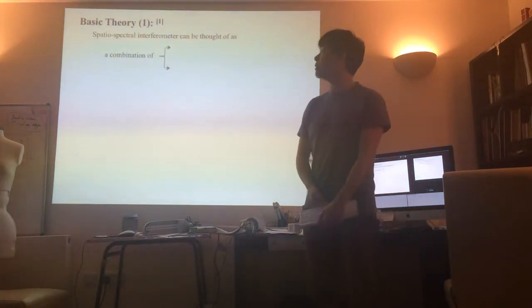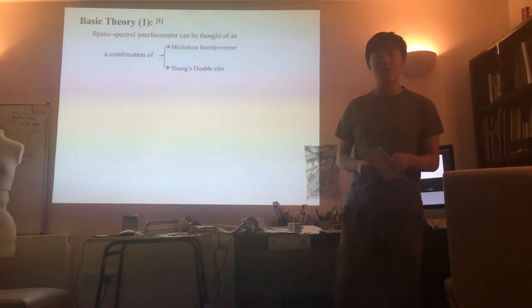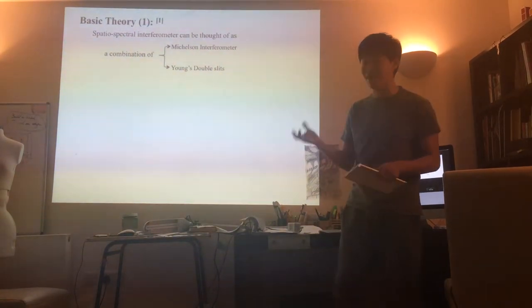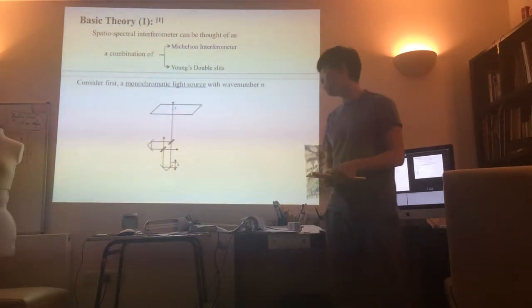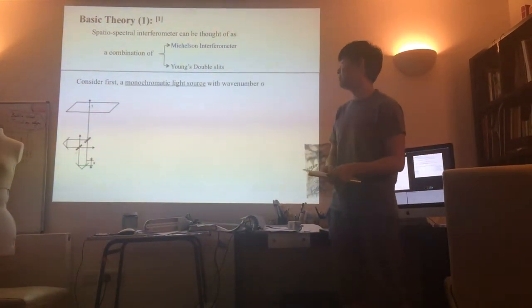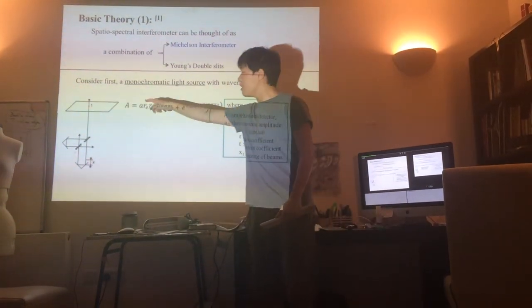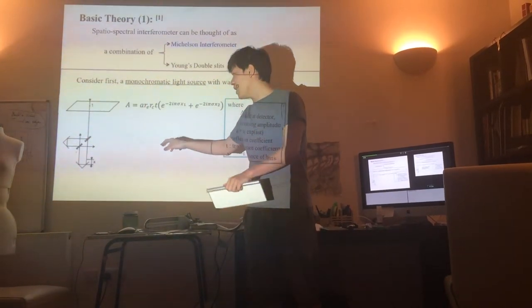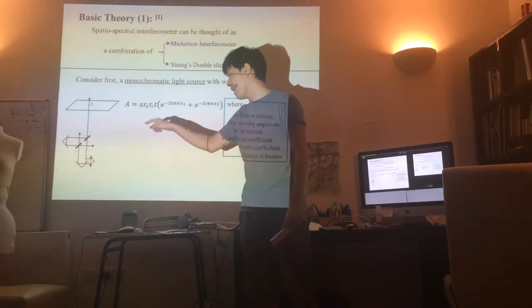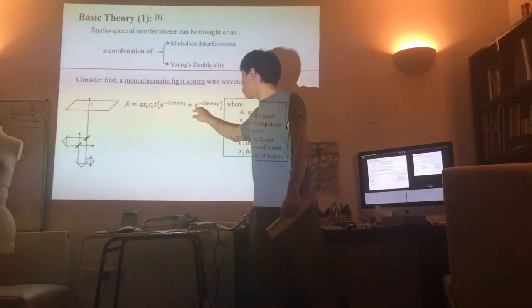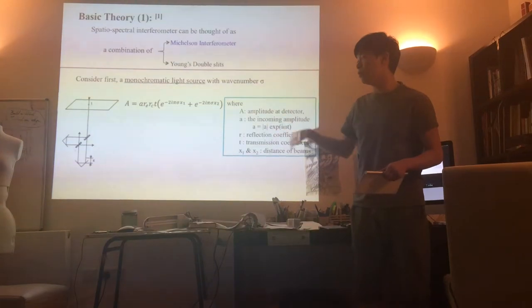So what is the basic theory? The interferometer can be thought of as a combination of Michelson interferometer and Young's double slit. Let me briefly remind you of the setup of these two. This is Michelson interferometer. Let's consider monochromatic light. This would be the mathematical expression, which basically means light coming in, being split into two equal light rays and being reflected back.